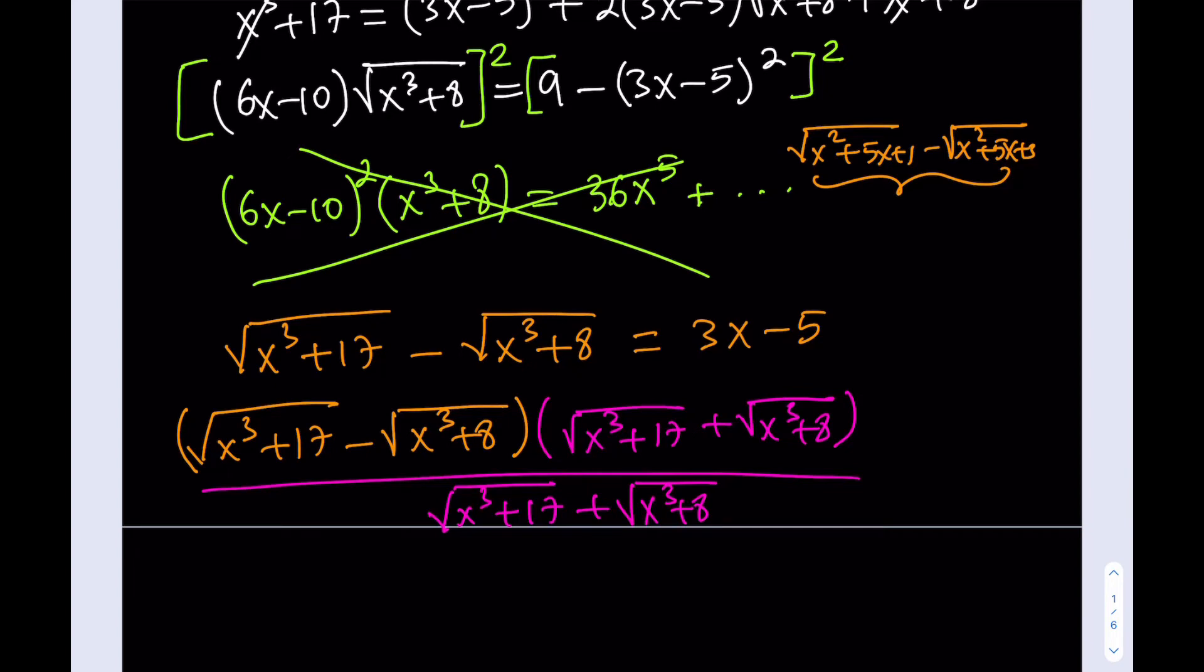Now, one concern here might be that could we be dividing by zero? And I can tell you that we're not. Because this expression here is not going to be zero. You can hopefully see that. It's not going to be zero. So now we're good. But this is still equal to 3x minus 5 because we multiplied and divided.